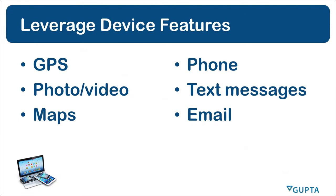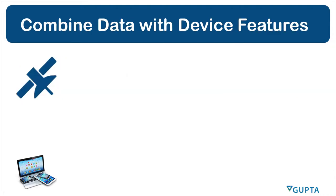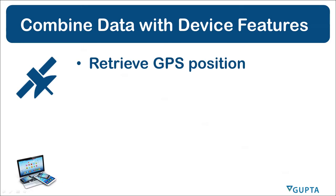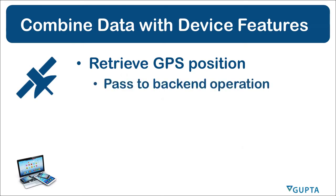In this video I'm going to show you how you can leverage device features like GPS, photo, video, maps, phone, text messages and email. You can actually retrieve the current GPS position of the device — that also works for laptops and desktop computers. You can pass the current GPS position to your back-end operation to store the current work location of a person, for example.